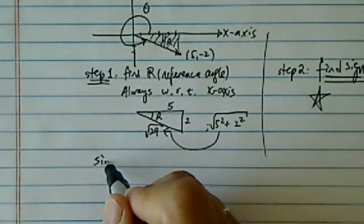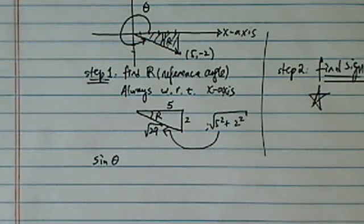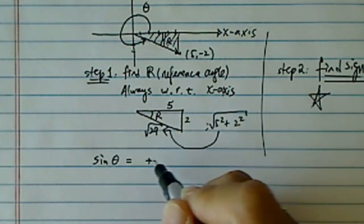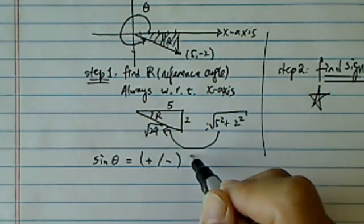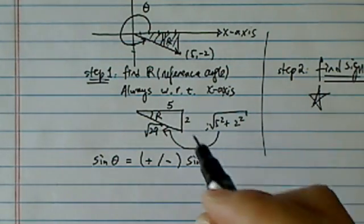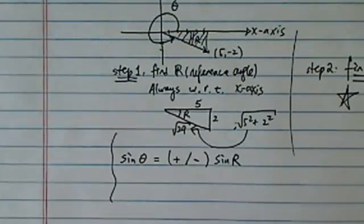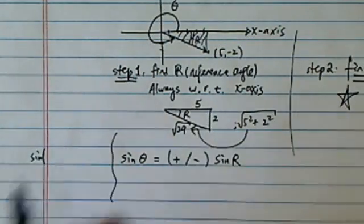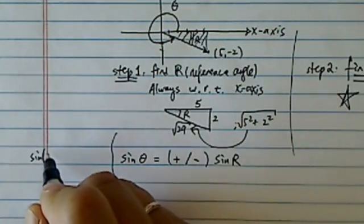So therefore, sine theta is what we want to find, is equal to plus or minus sine of r. Now this one, you can actually prove it. Let's talk a little bit on the side. I'm not going to actually prove it because time is running out.